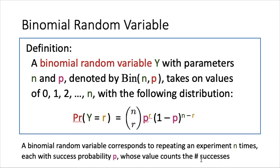Let's look at the special case. What is the probability that Y equals 0? Y equals 0 corresponds to having no successes at all. This happens if we fail the first time, the second time, the third time, up to the nth time. So the chance of Y equal to 0 is 1 minus p to the power n, which agrees with the formula when r equals 0.